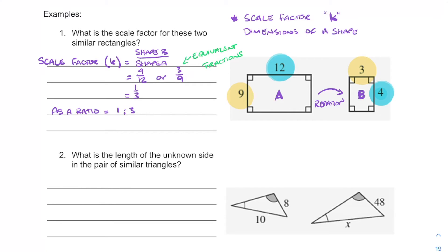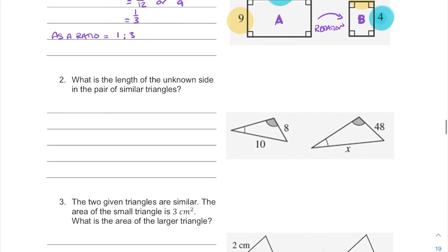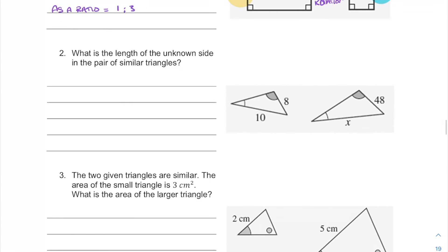So that's just finding the scale factor. Let's have a look at question two. This time we've got a couple of triangles, similar triangles with an unknown side. So we're going to need to find a scale factor and then we need to find our unknown side. So again, I'm going to label my shapes A and B. So k for our scale factor.